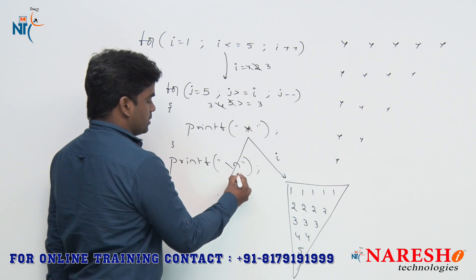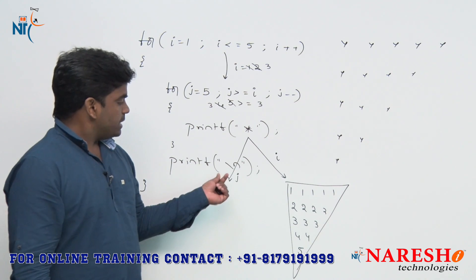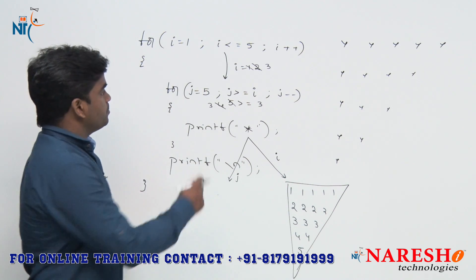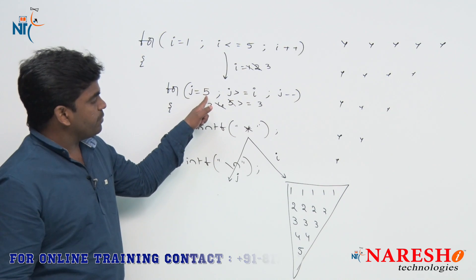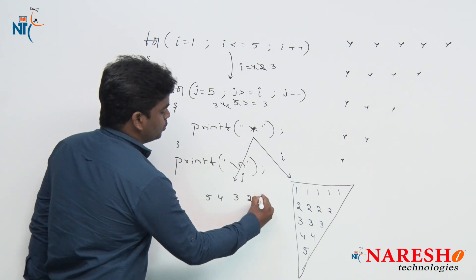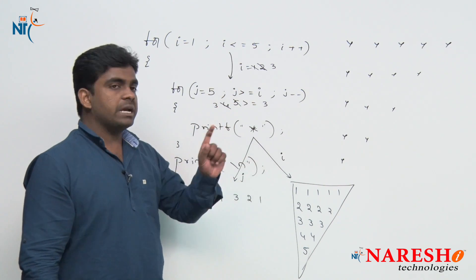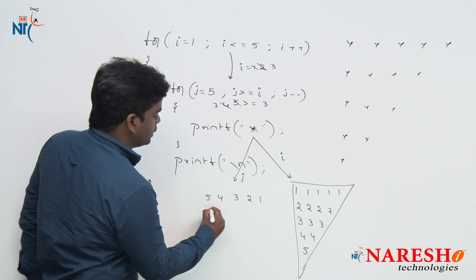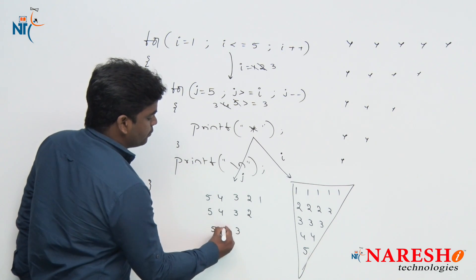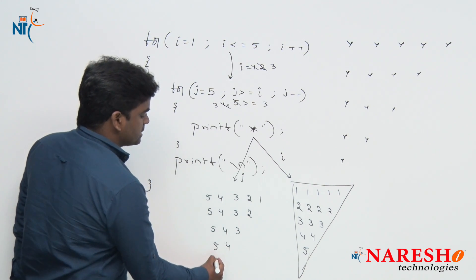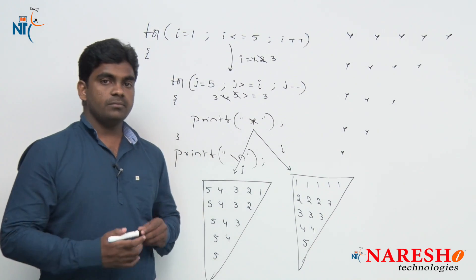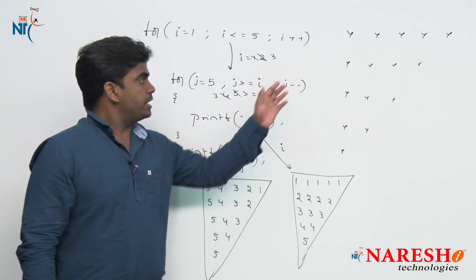Now suppose we are printing the j value — what does it print? In the first case j value starts at 5, so it prints 5, 4, 3, 2, 1. In the second iteration i value becomes 2 but j value starts at 5, so it prints 5, 4, 3, 2. Next i value becomes 3, so it prints 5, 4, 3. Then i value becomes 4: prints 5, 4. Then i value becomes 5: only prints 5. So that is the pattern it will print whenever we are printing the j value. If you print stars, it will print the star pattern we already know.